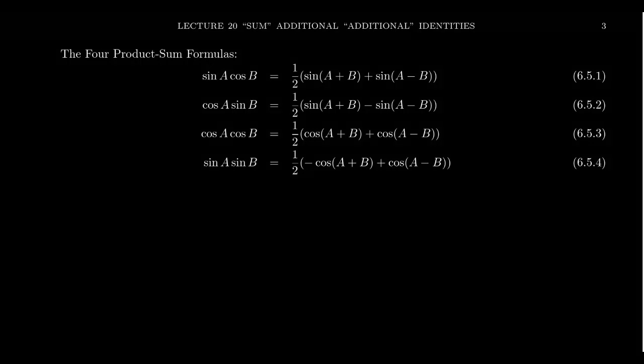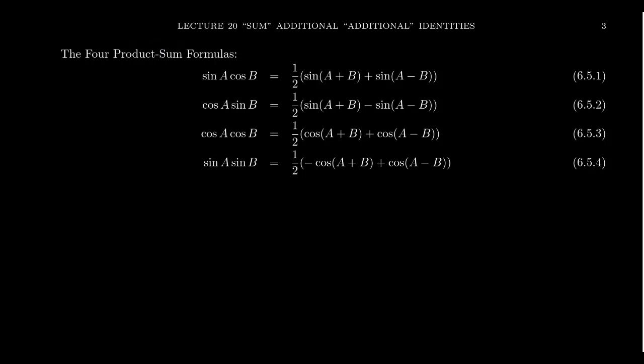In this video, I want to discuss the four so-called product-to-sum identities. This is a directional statement — product-to-sum. They get this name; it's not the most clever name, it's like calling a dog a furry quadruped that barks. We're just describing what we see here. The idea of the product-to-sum identities is that you have a product of sine or cosine.